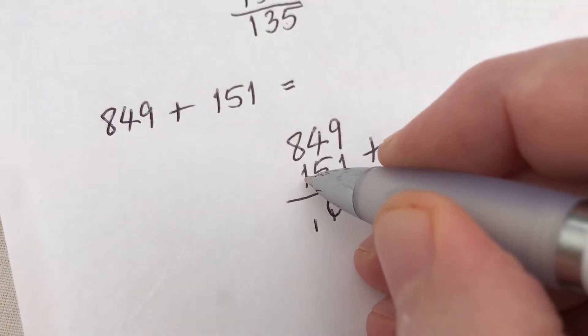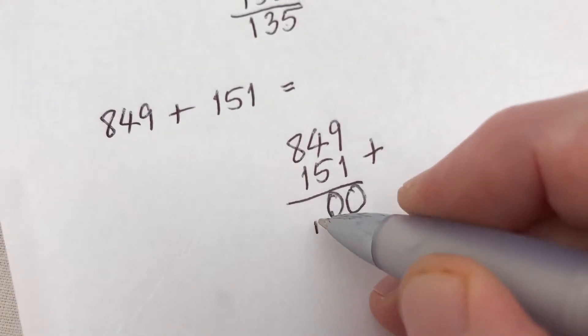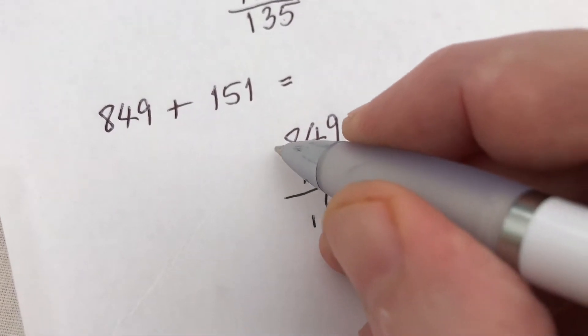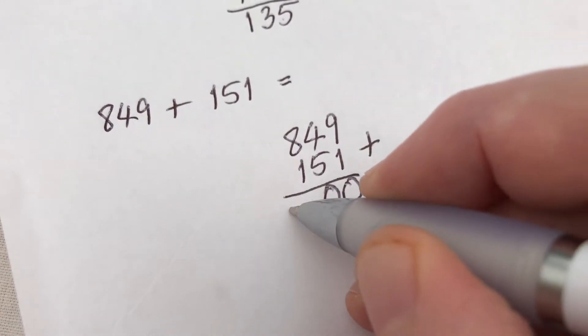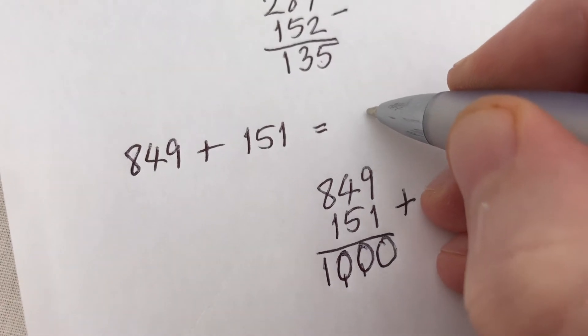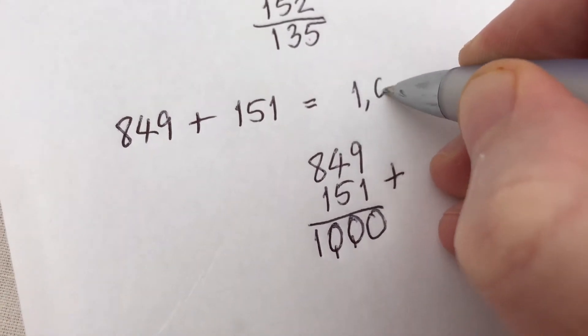8 plus 1 is 9, plus the 1 is 10. It makes 10. There's no more units to carry over to, so it's got to be written down. That gives us the answer here of 1,000.